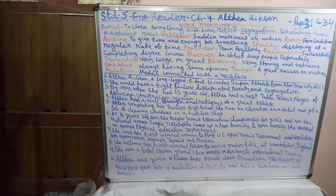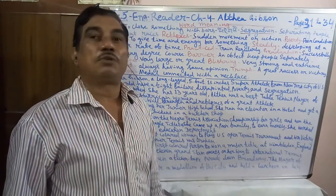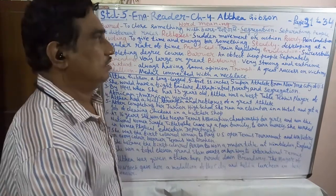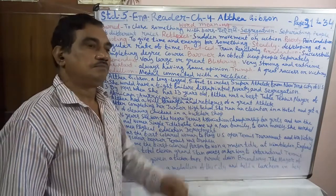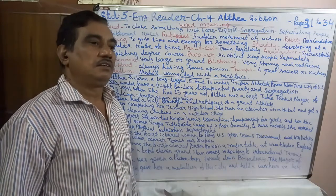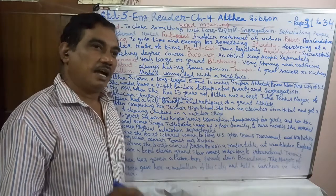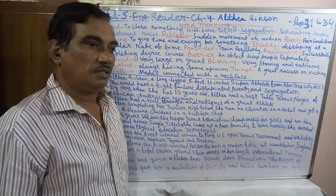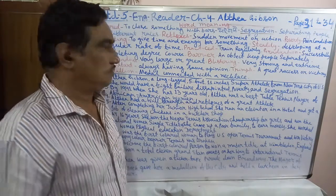Good morning, students of standard fifth. Now we will start the English reader book, chapter 4. Chapter 4 is about Althea Gibson, a person of African American origin. He had stayed in America but she belongs to Africa, so she is an African American citizen.